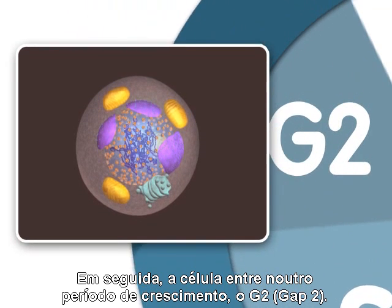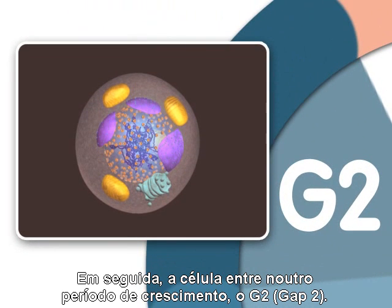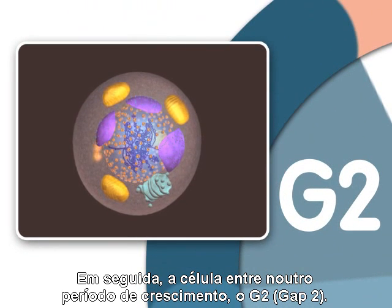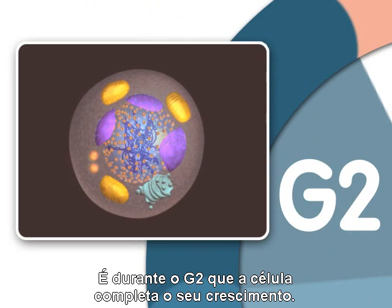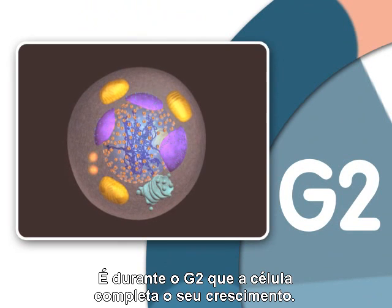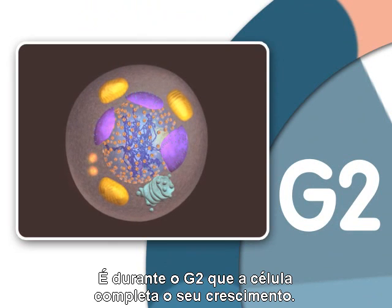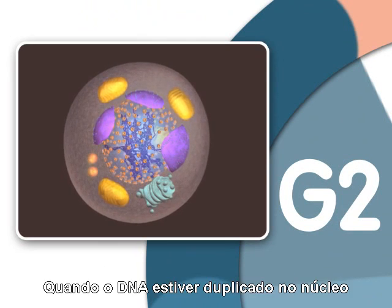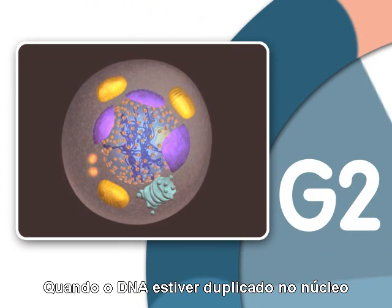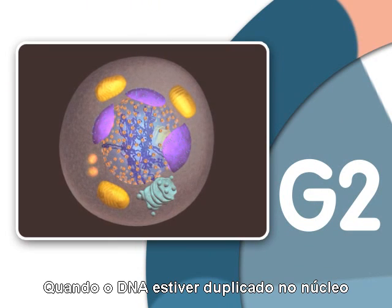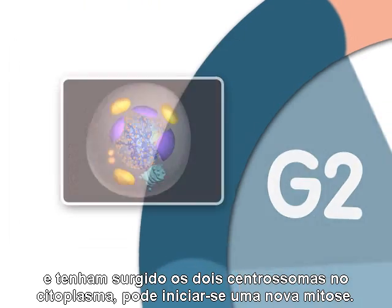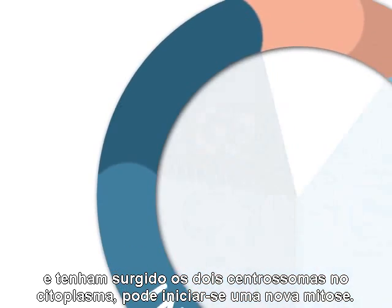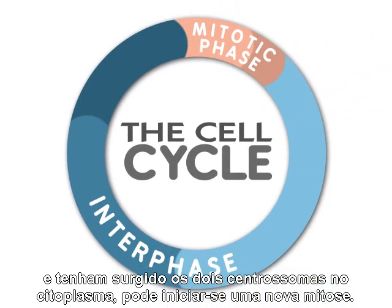The cell next enters another growth stage called G2, or Gap 2. It is during G2 that the cell finishes growing. Once the cell has duplicated DNA in the nucleus and two centrosomes have appeared in the cytoplasm, mitosis can begin.